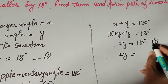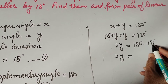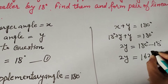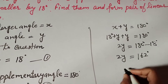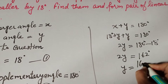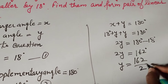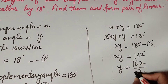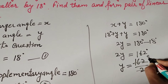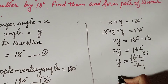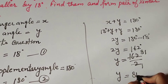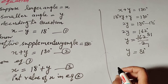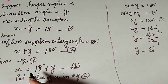So 2y equals 180 minus 18 degrees, which equals 162 degrees. Therefore y equals 162 over 2. Since both 162 and 2 are divisible by 2 — 2 ones are 2, 81 twos are 162 — so y equals 81 degrees.